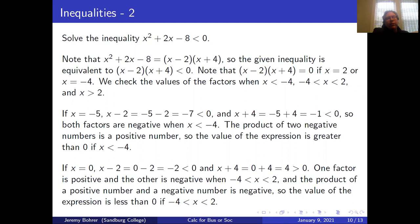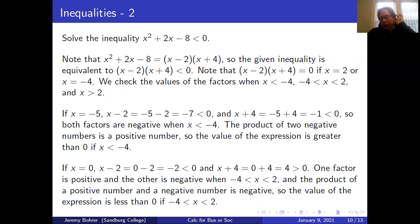If x = -5: x - 2 = -7 < 0, and x + 4 = -1 < 0. Both factors are negative when x < -4, and the product of two negatives is positive, so the expression is greater than zero. If x = 0: x - 2 = -2 < 0, and x + 4 = 4 > 0. One factor is positive and the other negative when -4 < x < 2, and the product of a positive and negative number is negative, so the expression is less than zero.